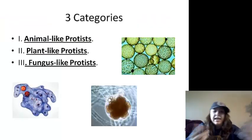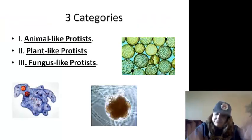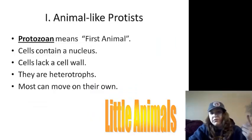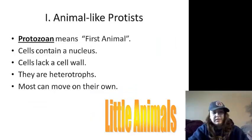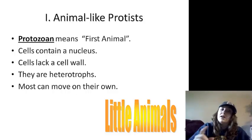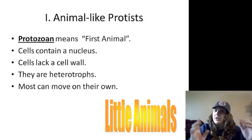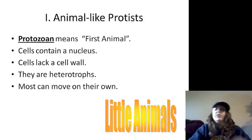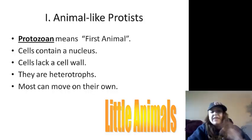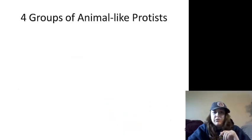Animal-like, plant-like, fungus-like. Animal-like protozoans — first animal. They contain a nucleus, do not have a cell wall, and do not have chlorophyll or chloroplasts. So they are heterotrophs — they have to get their own food and eat it. They can move, though.